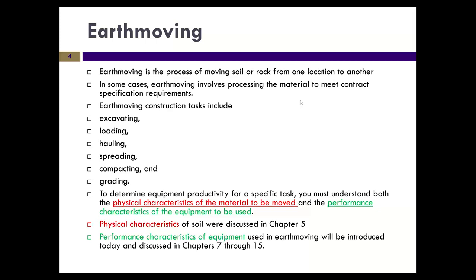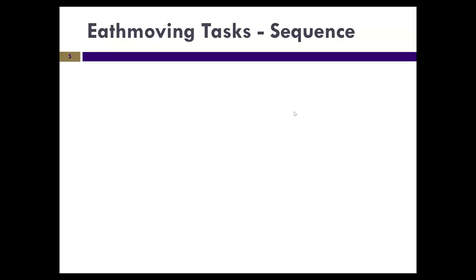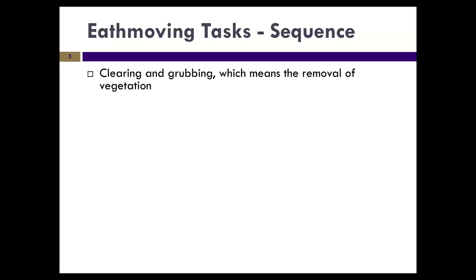We're going to start talking about the characteristics of equipment, how to read equipment performance charts, and how to determine how much work can get done. Suppose we come to a site — the first operation is clearing and grubbing, which refers to the removal of trees, vegetation, grass, and anything else sitting on the area we're going to build.